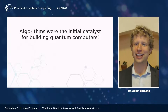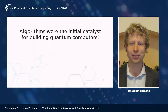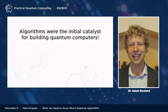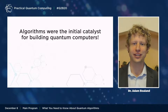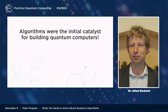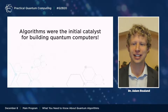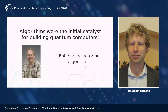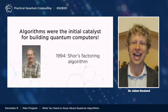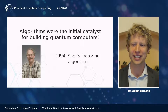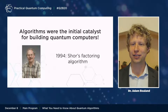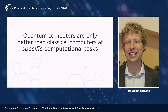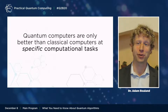Quantum algorithms were the initial catalysts for building quantum computers in the first place. Way back in the 1980s and early 90s, theorists realized that a hypothetical quantum computer might be able to solve certain problems much faster than a classical computer. This theoretical work came to fruition in 1994 when Peter Shor gave the first quantum algorithm that exponentially outperforms a classical algorithm — namely, his algorithm for factoring integers, with many applications to cryptography. In the last 20 or so years, we've learned a lot about quantum algorithms.